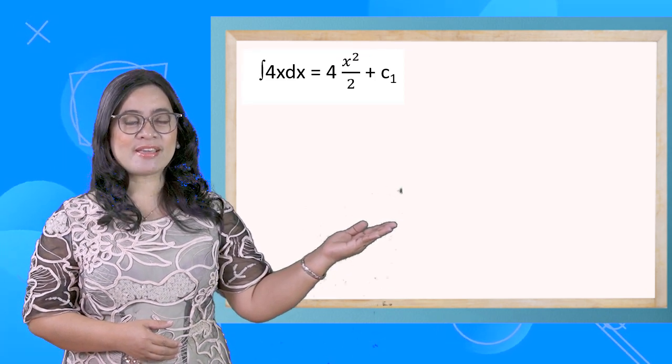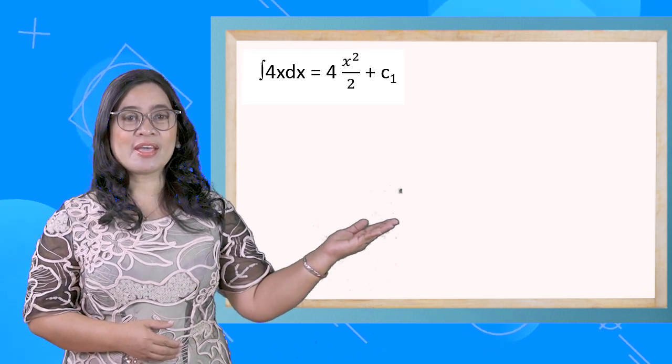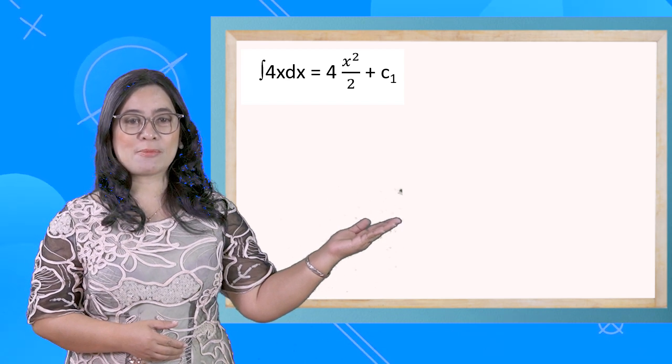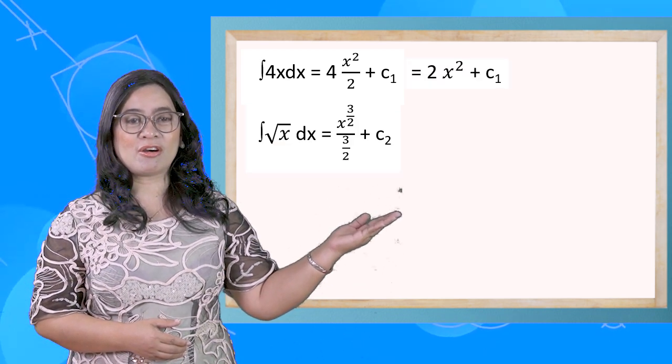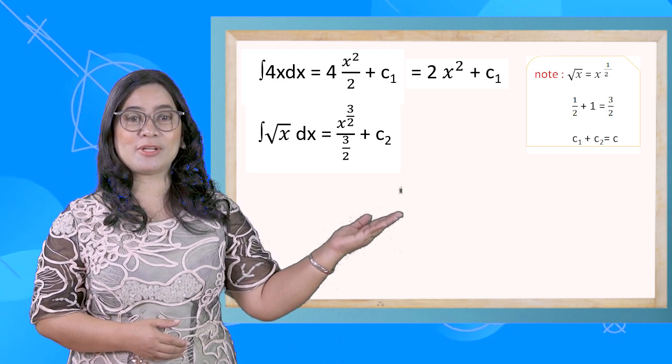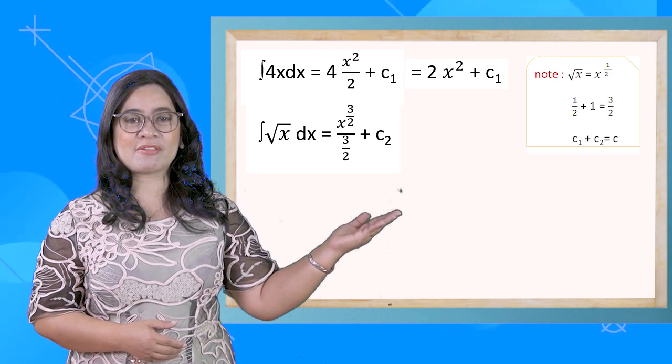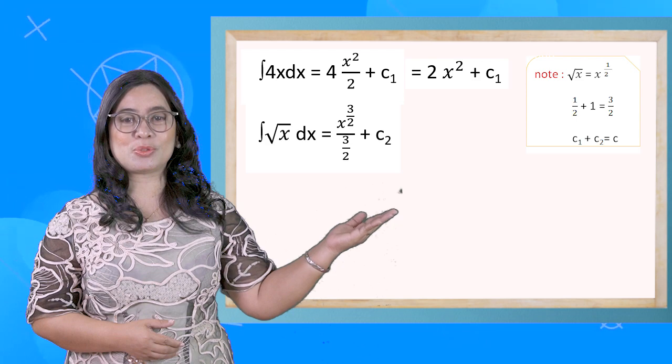Thus, the integral of 4x dx is equal to 4x²/2 + c₁, and the integral of √x dx is equal to x^(3/2) / (3/2) + c₂.